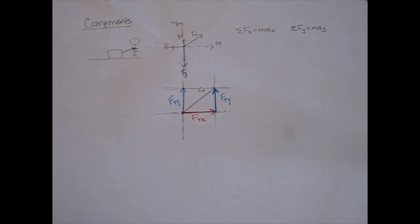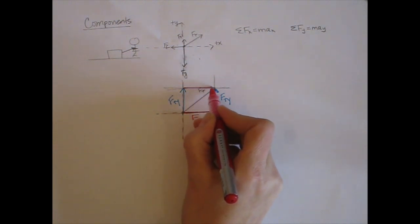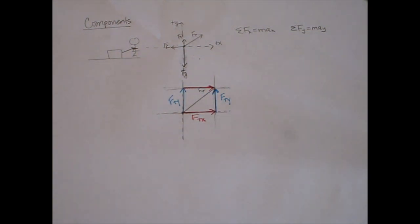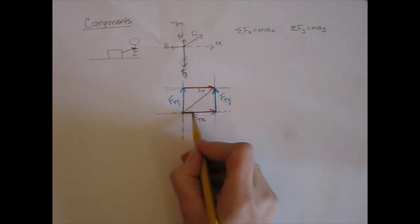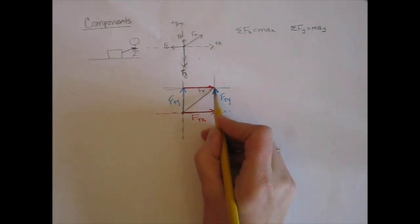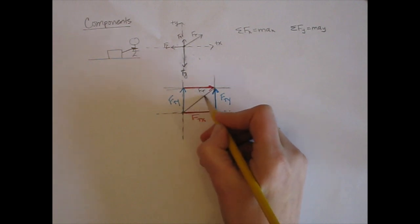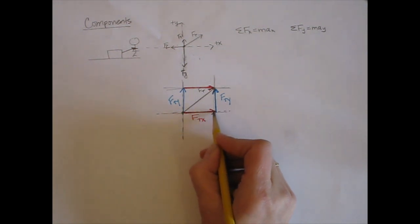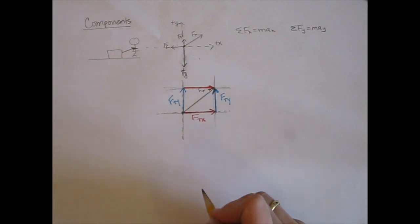And likewise, you could think of this from here to here as the x component of the tension. And what you'll notice is the x component is a vector, y component is a vector. If you add these two together, they're equal to that original vector that you started with. So the x component of the tension plus the y component of the tension equals this force of tension vector.